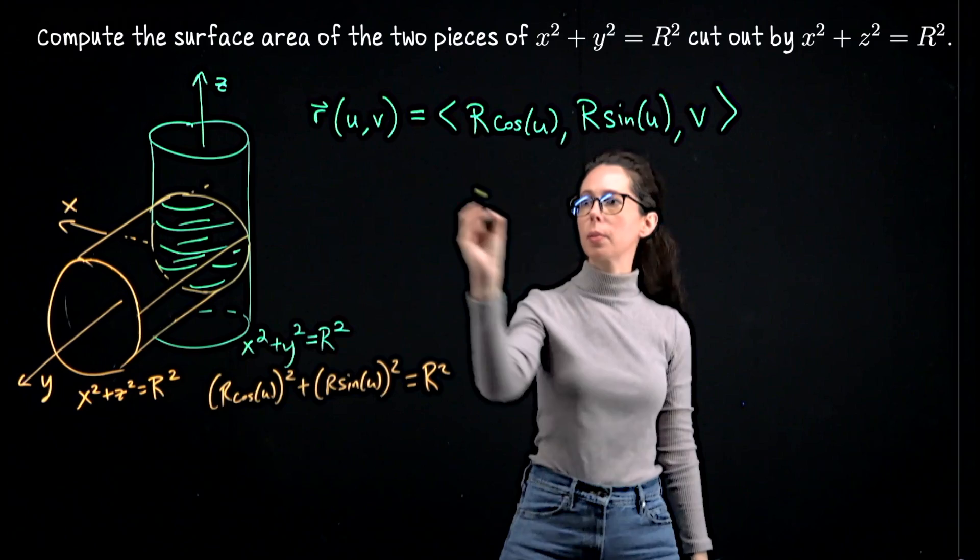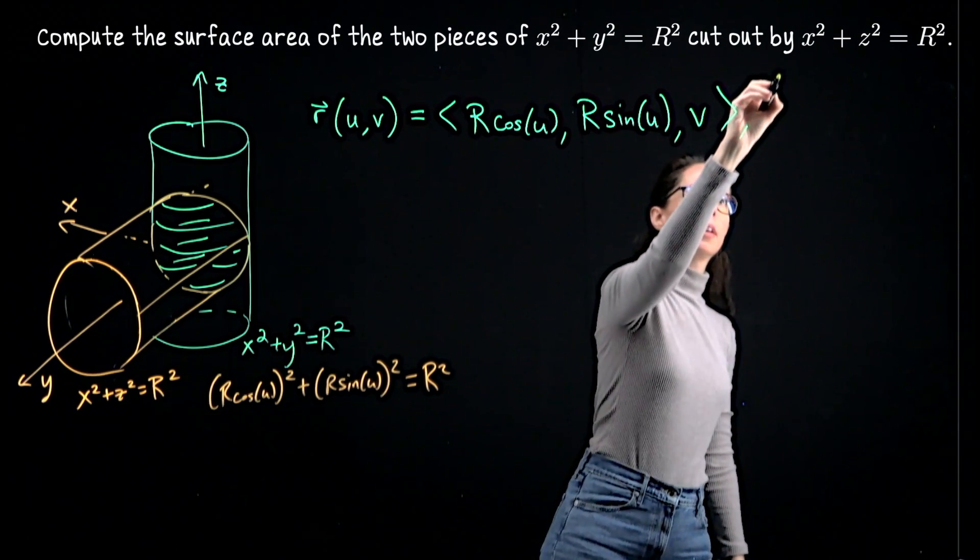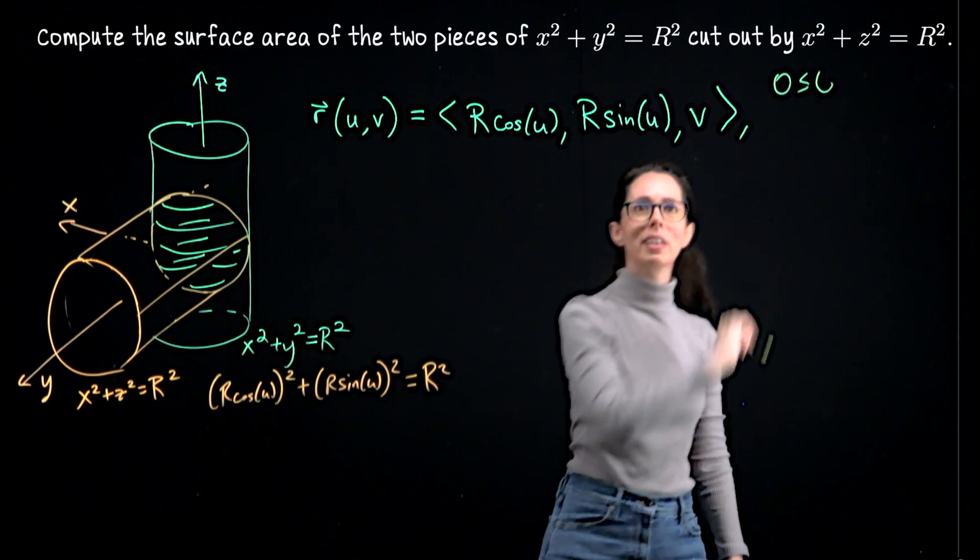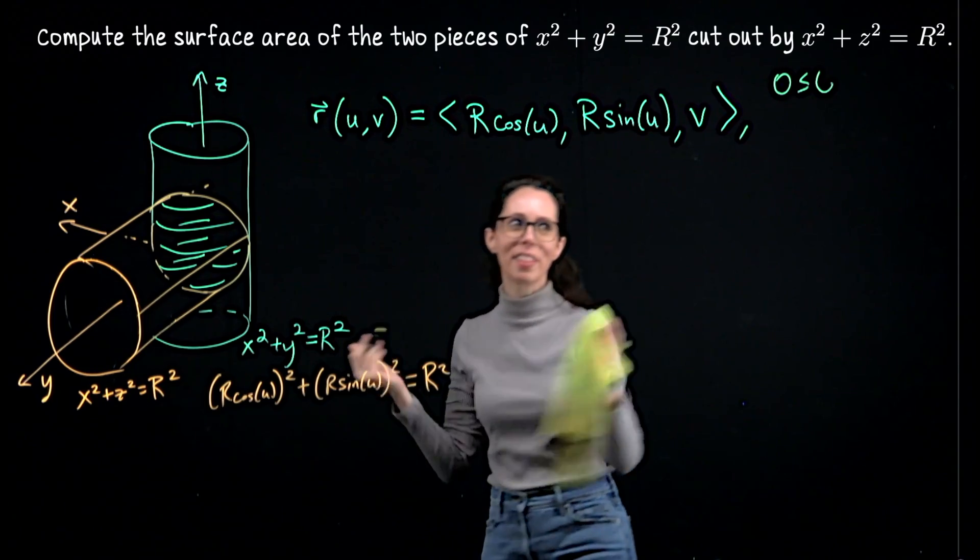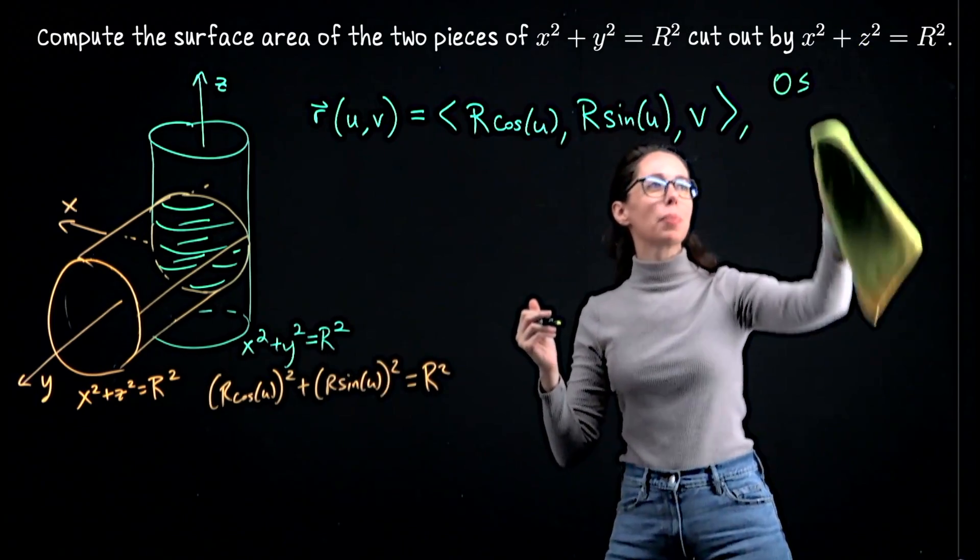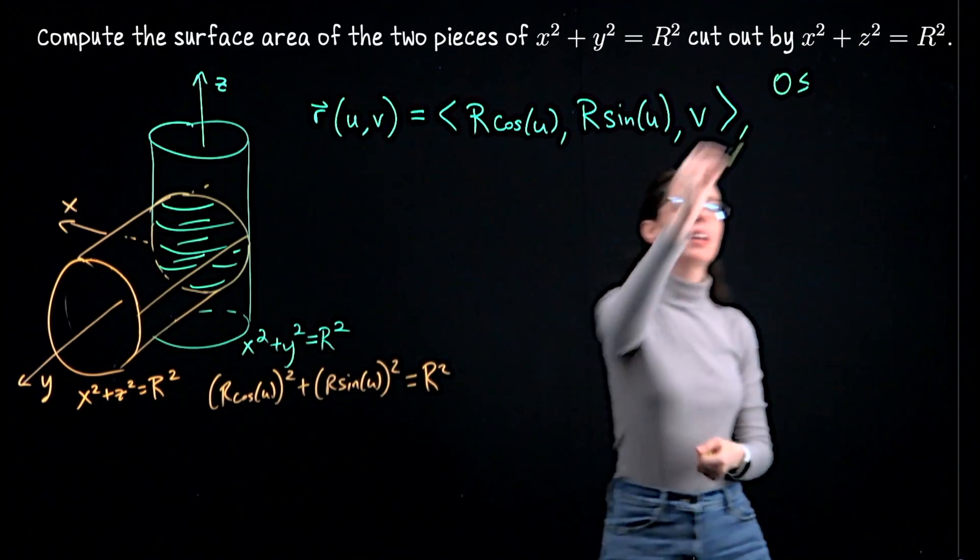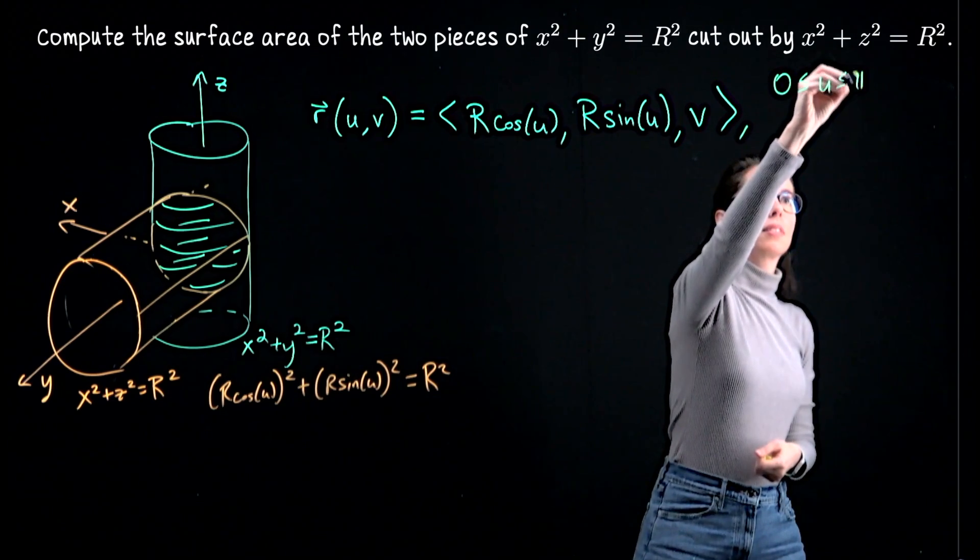That's my u parameter. So let me write about here, zero is less than or equal to u. I'm starting to write theta, maybe I should call these parameters theta and z, but we'll stick with u and v.